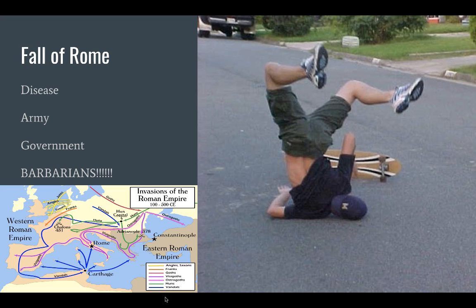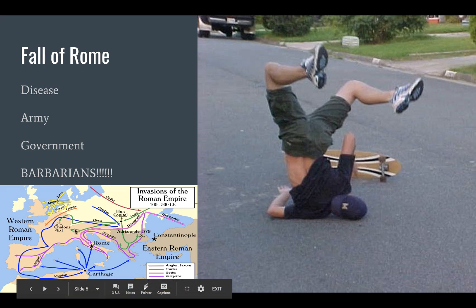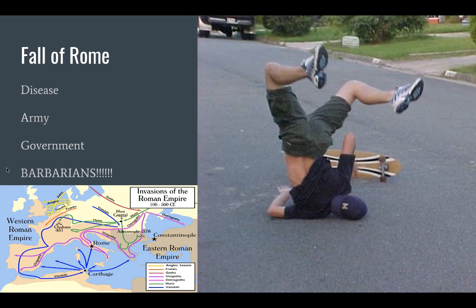Eventually Rome does fall apart. You've got disease, a weakening army, and corruption in the government. At one point when they were an empire, they had a series of 24 emperors — 23 of whom were assassinated, and the one that wasn't died of the plague. With a struggling army, disease, and an ineffective government, you get a series of invasions by people known as the Barbarians — Goths, Vandals, Huns, Visigoths, Ostrogoths — who eventually fracture the empire. The western half completely collapses, while the Eastern Roman Empire, the Byzantines, survives. And Rome disappears.